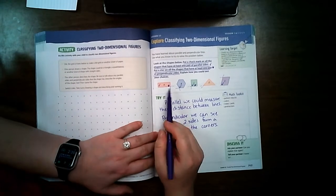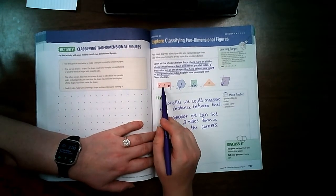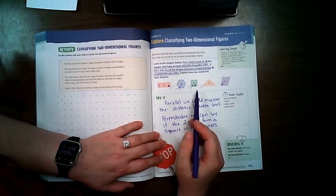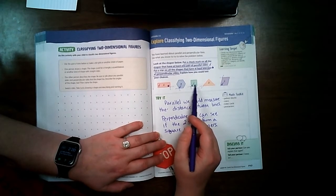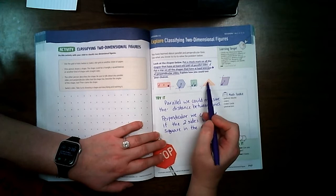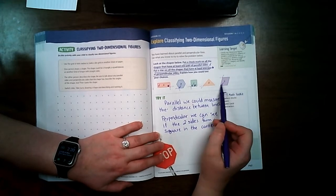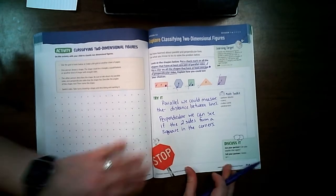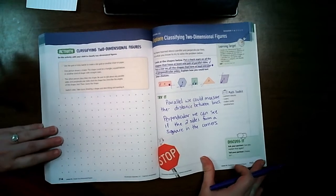Okay. So these have squares and we can measure. This one does not have a square but we could measure. This one has squares and we can measure. This one doesn't have squares and we can't measure. This one we can measure but it doesn't have squares. Let's turn to page 718.